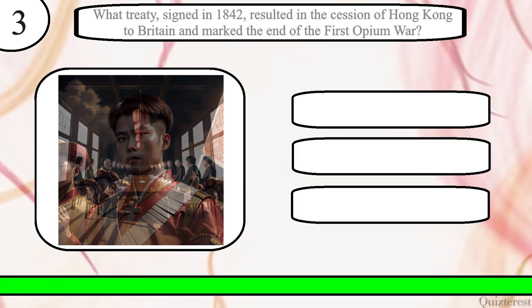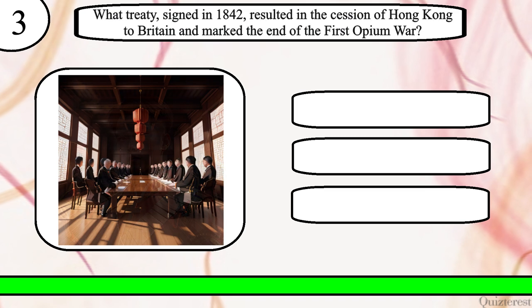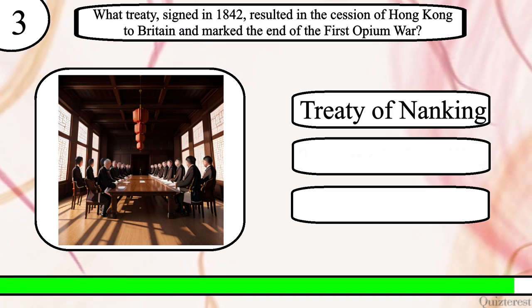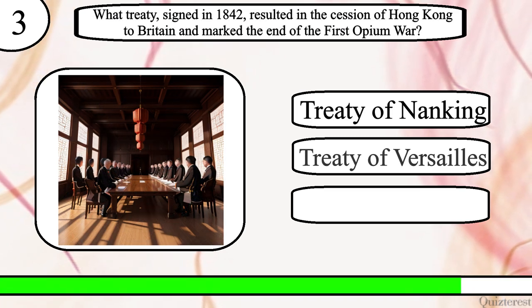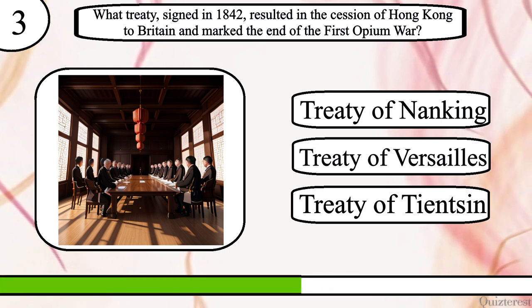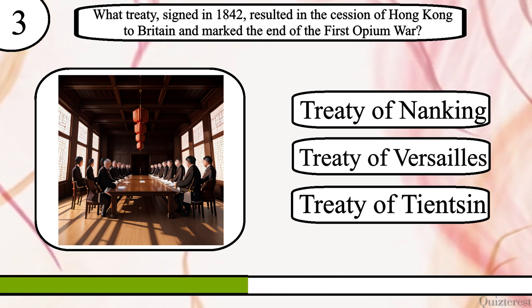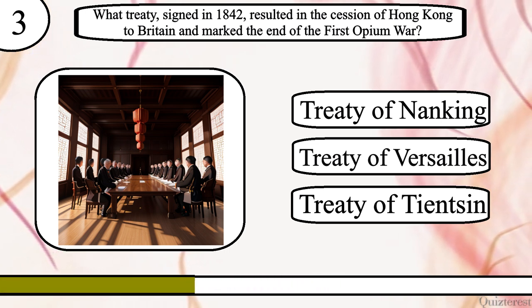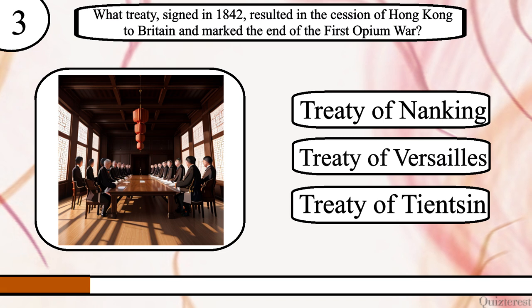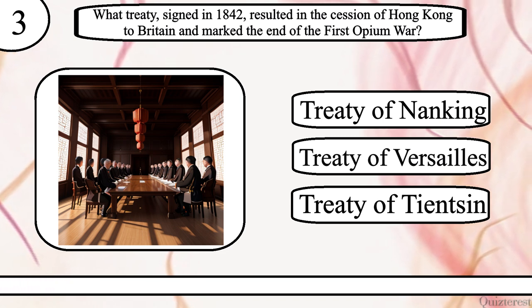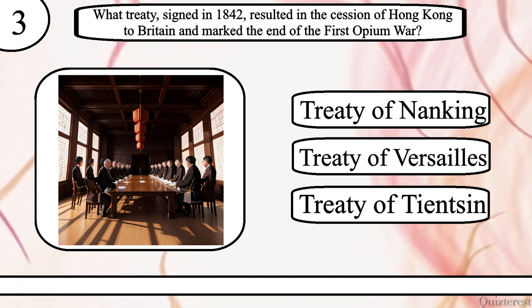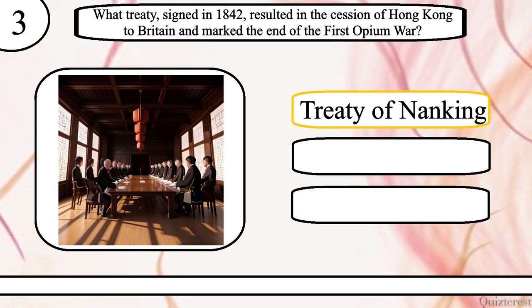Question 3. What treaty, signed in 1842, resulted in the cession of Hong Kong to Britain and marked the end of the First Opium War? Treaty of Nanking, Treaty of Versailles, or Treaty of Tientsin? The correct answer is Treaty of Nanking.